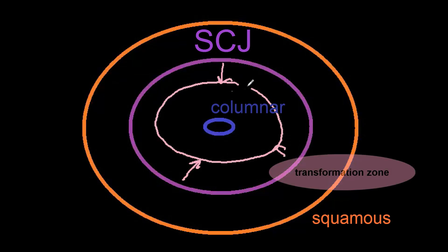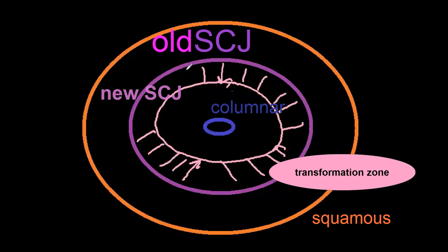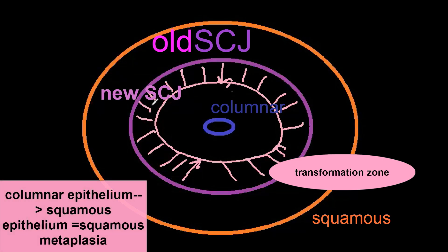The transformation zone is the area between the old SCJ and the new SCJ, depicted here with pink stripes. This is the area where columnar epithelium is replaced by squamous epithelium in a process called squamous metaplasia. The cells undergoing metaplasia are vulnerable to various carcinogens such as HPV.